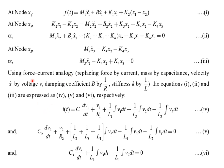As an example, force current analogy is applied. Force is replaced with current I, M1 is replaced with C1, and acceleration/velocity is replaced with voltage V. The first equation becomes: C1·dV1/dt + V1/R1 + 1/L1·∫V1 dt − 1/L3·∫V2 dt = I. For the second equation: C2·dV2/dt + V2/R2 + (1/L1 + 1/L3)·∫V2 dt − 1/L4·∫V3 dt − 1/L2·∫V1 dt. For the third: C3·dV3/dt + 1/L4·∫V3 dt − 1/L4·∫V2 dt = 0.